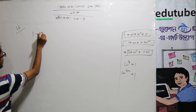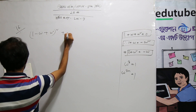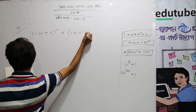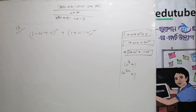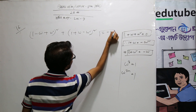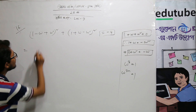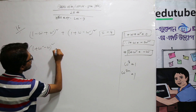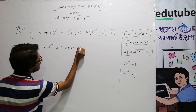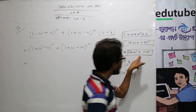1 minus omega plus omega squared whole square, plus 1 plus omega minus omega squared whole square. We have 1 plus omega squared equals 2 minus 4.